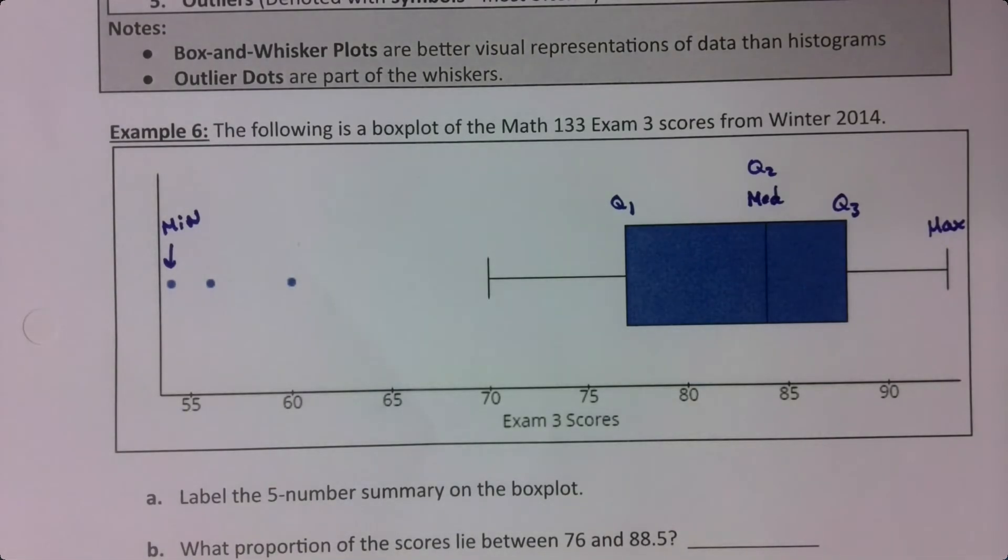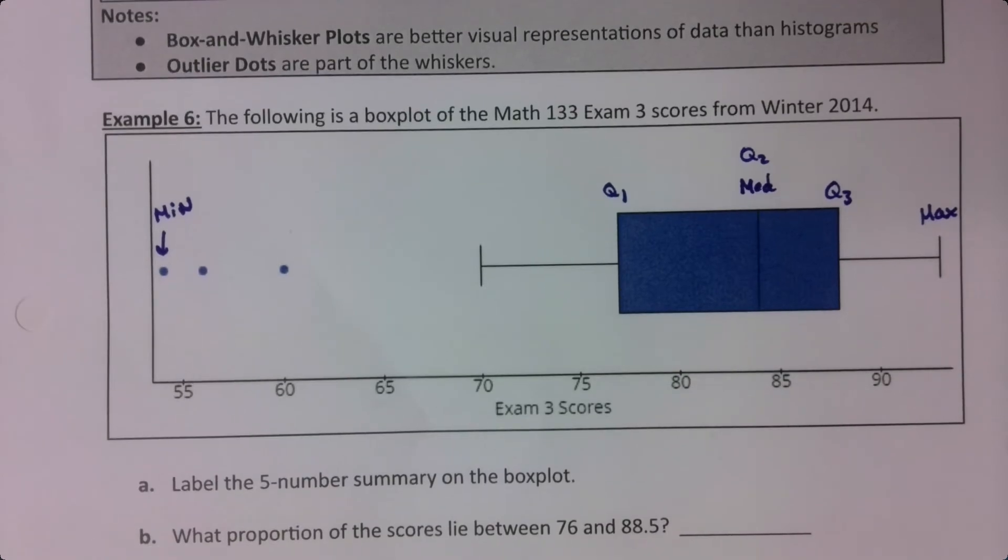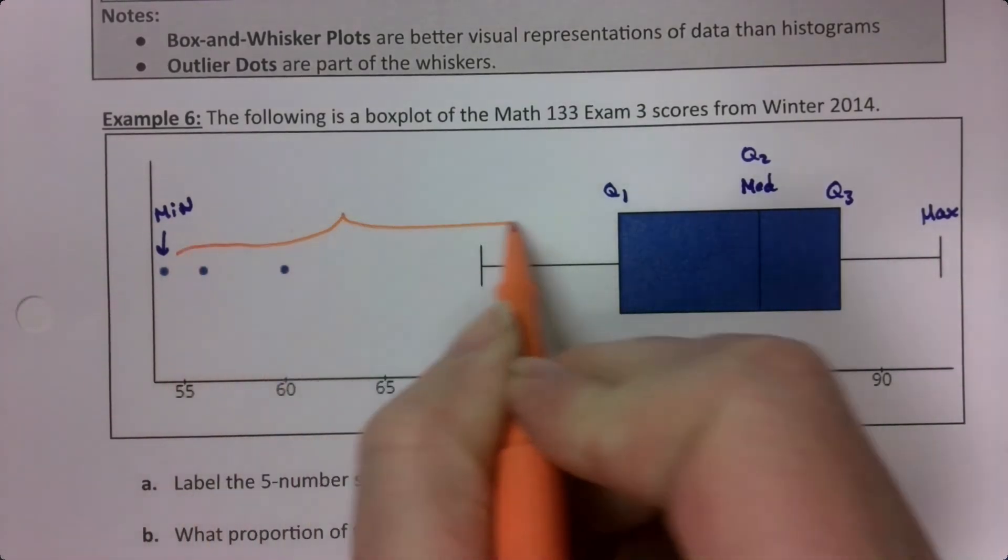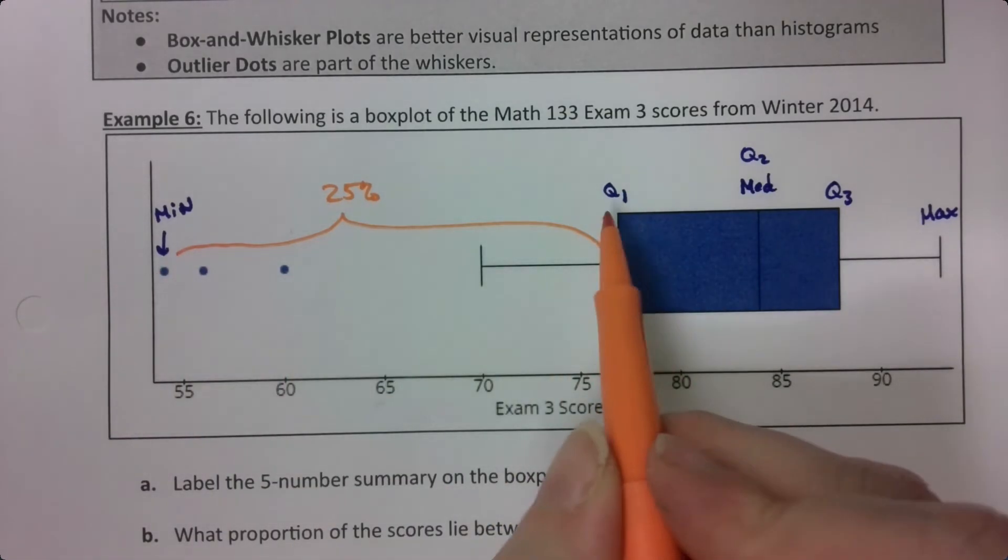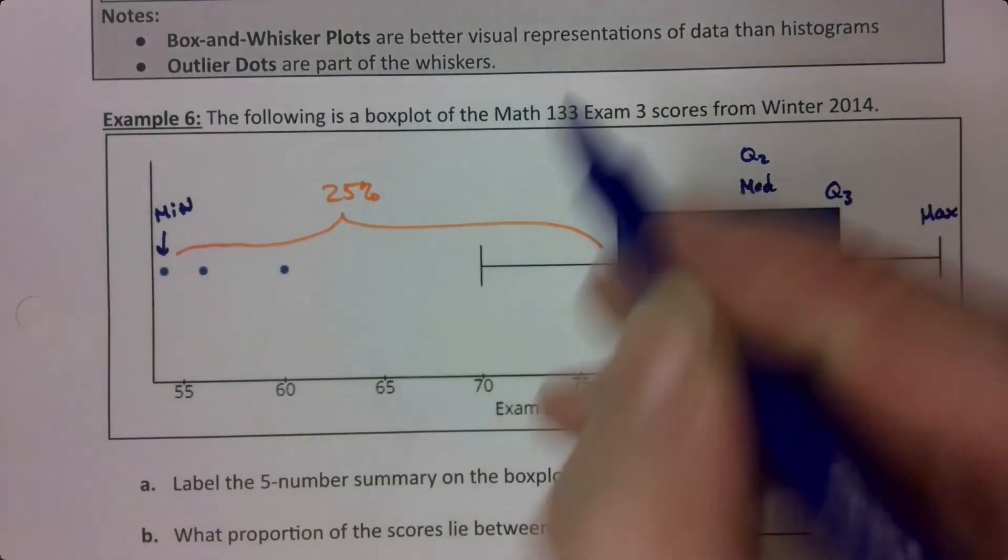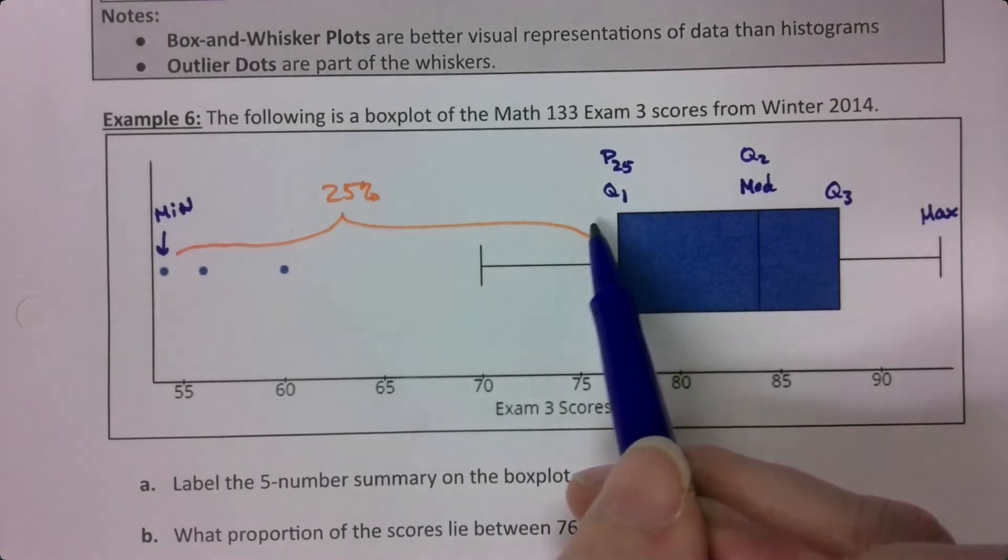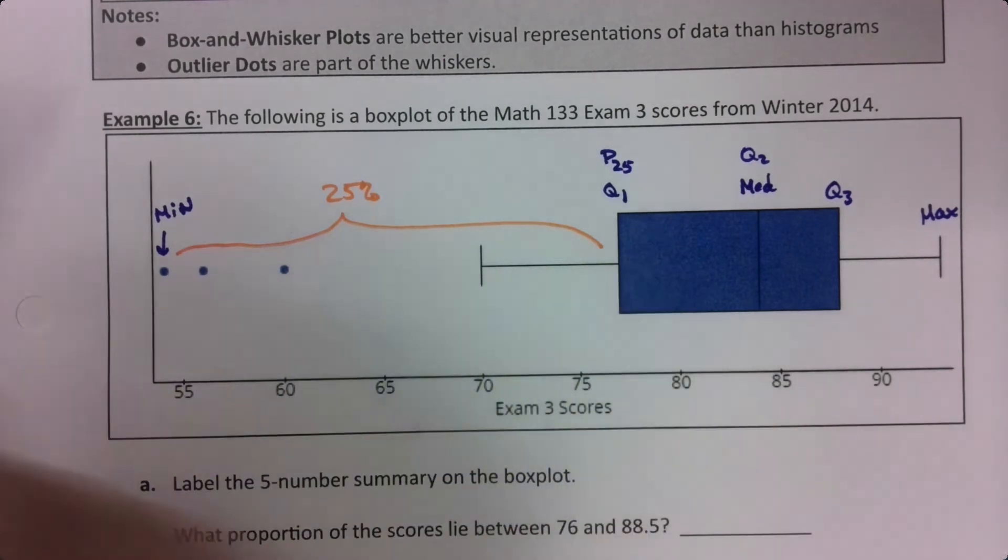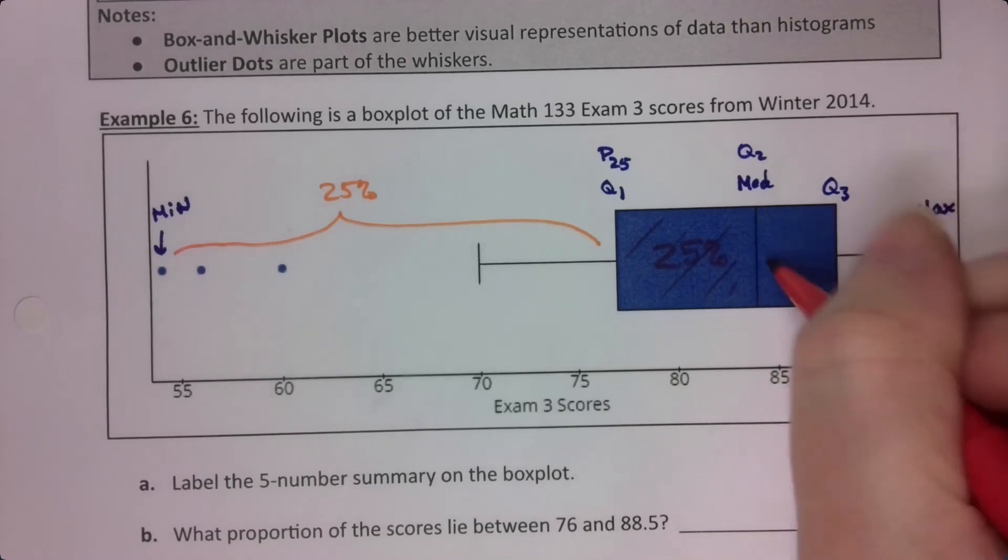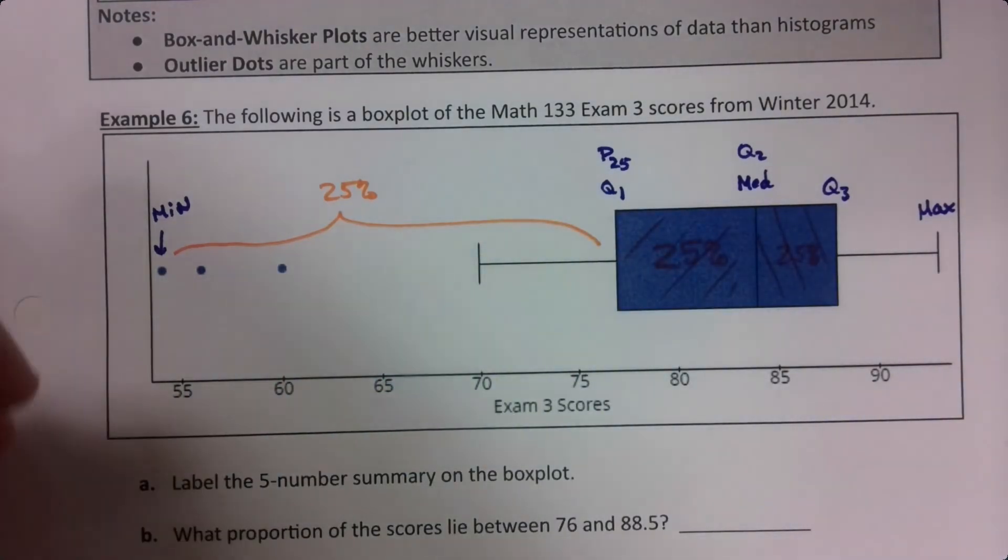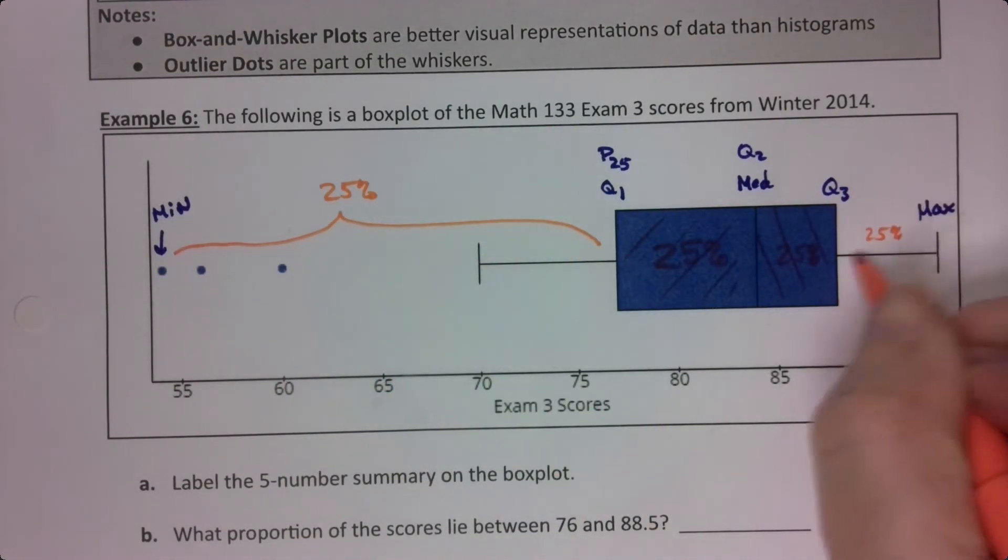You'll notice they're not all equally spaced. That's not what this is a graph of, but they do all have equal percentages. That's what's key. 25% of your data fall here between that minimum and that Q1, because Q1 is the 25th percentile. So this is P25, so of course 25% are at or below that value. Then another 25% is in here, another 25% is in here, and another 25% is over here.